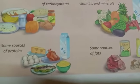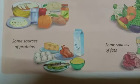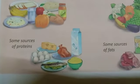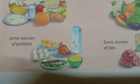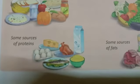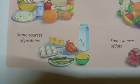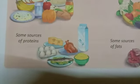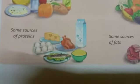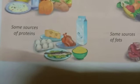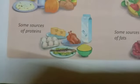Thirdly, we come to proteins. You can see here some sources of proteins. Proteins are essential for the growth of muscles and body building. Sources of proteins include eggs, chicken, milk, cheese, pulses, and soya bean.